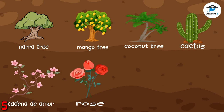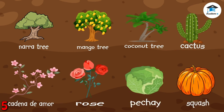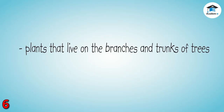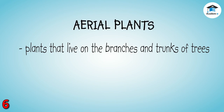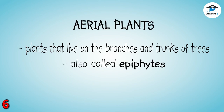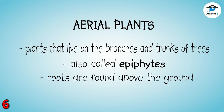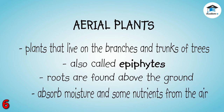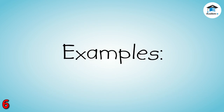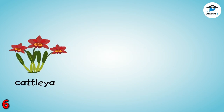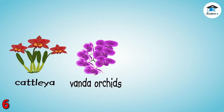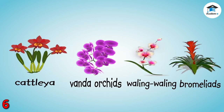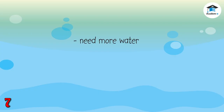Some plants live on the branches and trunks of trees or any other support to which they attach. These plants are called aerial plants or epiphytes. Their roots are found above the ground and they absorb moisture and some nutrients from the air. Examples of aerial plants are cattleya, vanda orchids, waling-waling, and bromeliads.